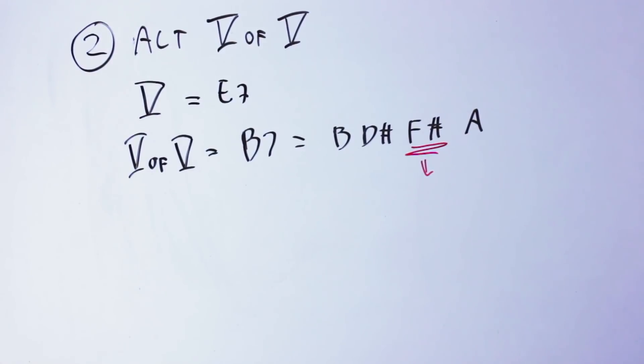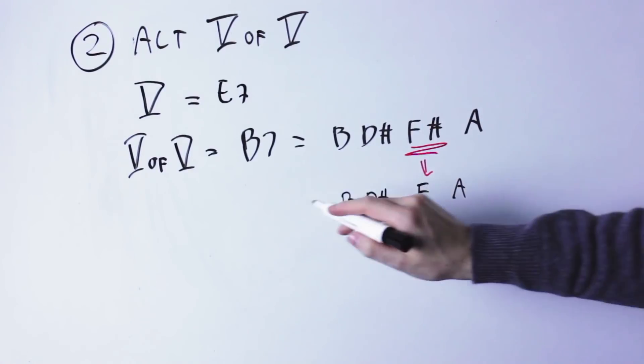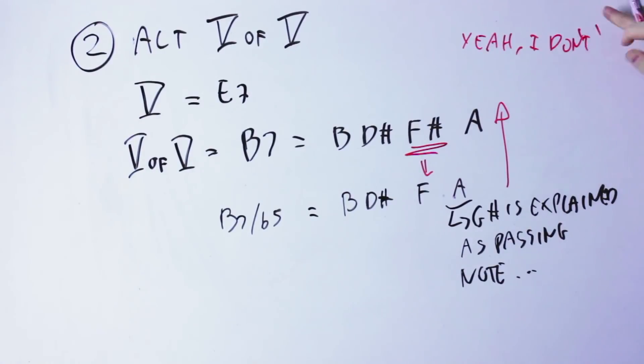If you take this B7 chord and you alter its fifth note, creating a B7 flat 5, and that would be a perfectly natural thing to do, then you get the Tristan chord. And it also fits Wagner spelling exactly.